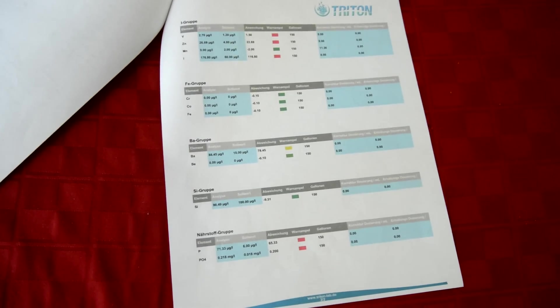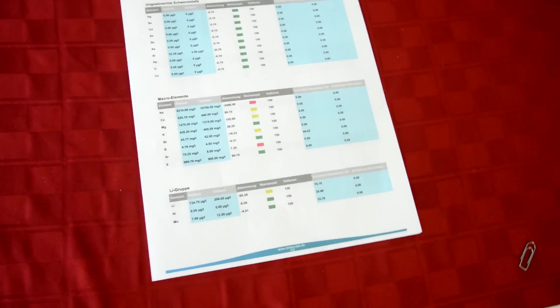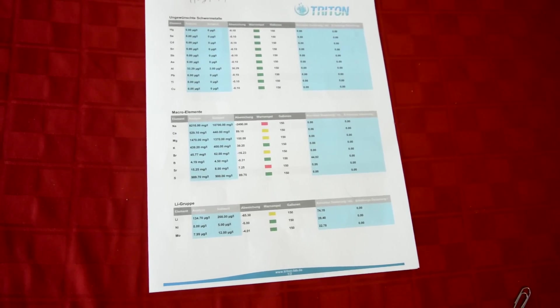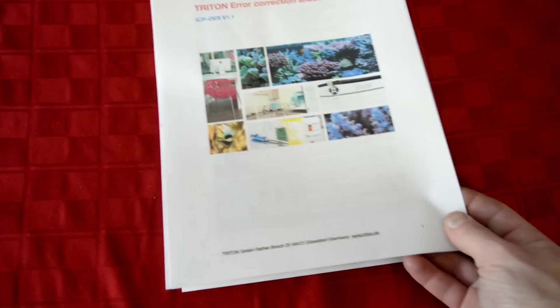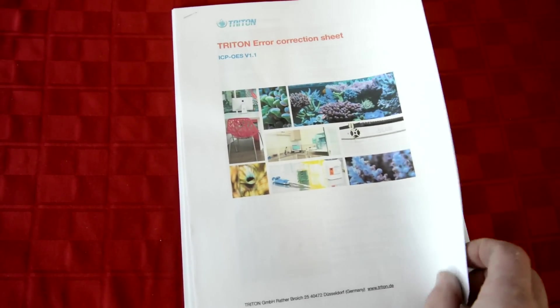And like I said, I'm using this as a method of keeping my Hannas, my Saliferts, and all my other tests in check. I also use it to test for a few things that I can't easily check for. Here's the correction sheet by the way, which teaches you and tells you how to correct each of the elements if they're off.